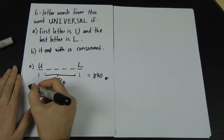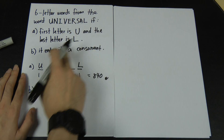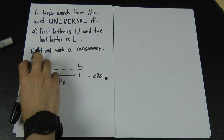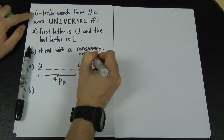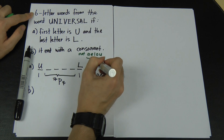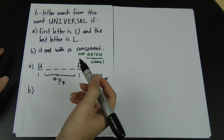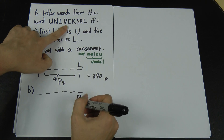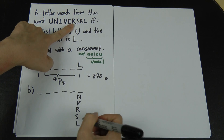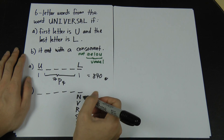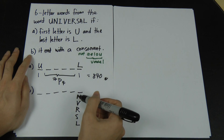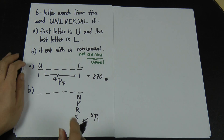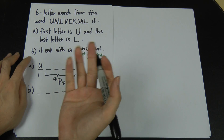For Part B, the 6-letter word must end with a consonant. A consonant means not a vowel — not A, I, O, U, or E. Looking at UNIVERSAL, the consonants are N, V, R, S, and L — that's 5 consonants. The last place must be a consonant, so we choose 1 from 5 consonants: 5P1 for the last position.